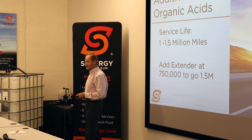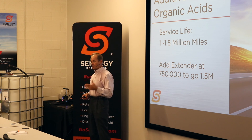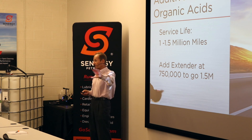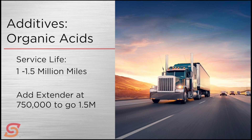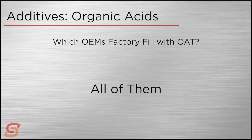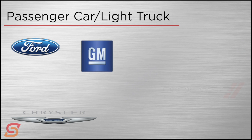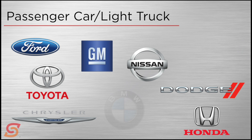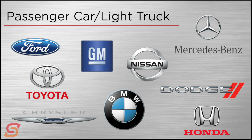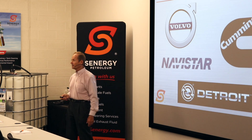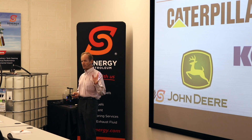As OEMs learned about OAT and ran tests, they were really happy — much lower maintenance than conventional. Which OEMs factory fill with OATs? All of them. On the passenger car side, GM was first with Dexcool — there was a formulation and mechanical problem that gave Dexcool a bad name initially, but the industry is over that now. Heavy-duty trucks are all OATs. Off-road is all OAT products.